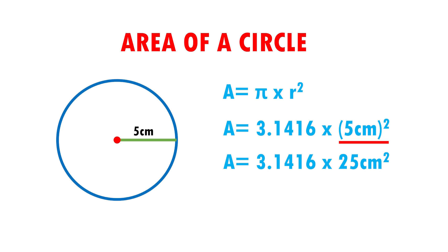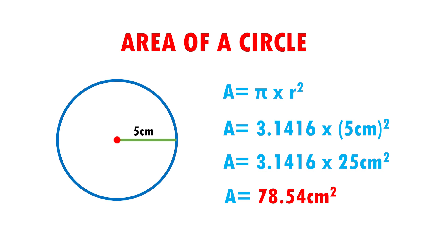Now I only have to multiply. Therefore, my area is equal to 3.1416 times 25 centimeters squared, which equals 78.54 centimeters squared. This means that this circle will fit 78.54 squares of 1 centimeter per side.